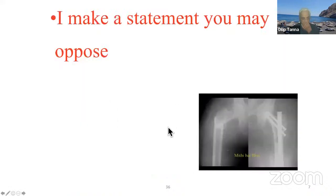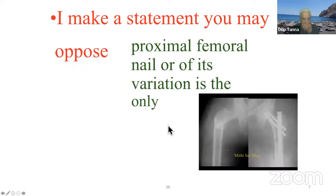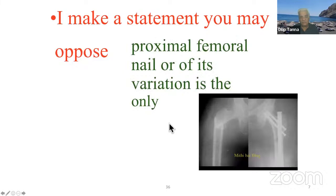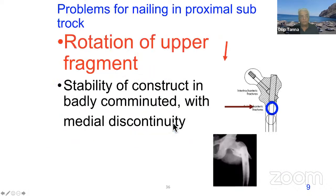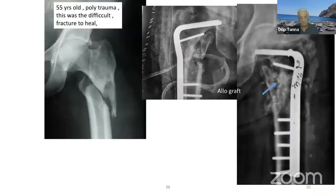I make a statement you may oppose: proximal femur nail or its variation is the only logical treatment in nailable subtroc. Which is nailable and which is not is the main decision. Problems from nailing in proximal subtroc: rotation of the upper fragment, stability of the construct in badly comminuted fractures with medial discontinuity.